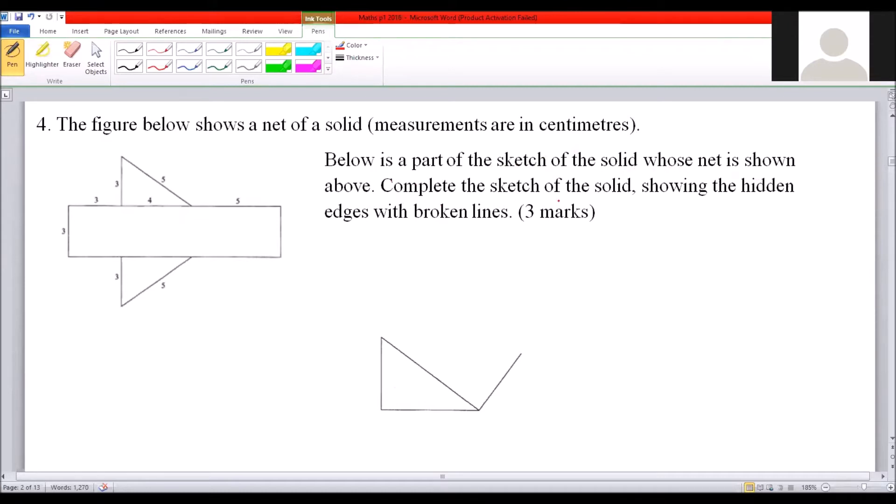Complete the sketch of the solid showing the hidden edges with broken lines. What you do here - you need to use a ruler. When you use a ruler on our net, we can see here we have five.